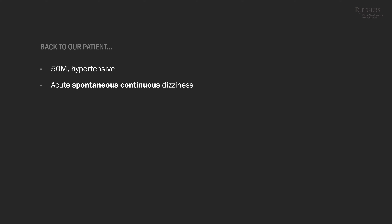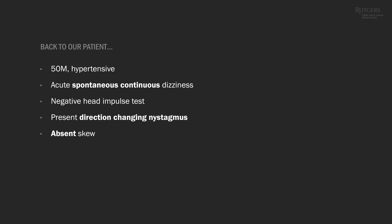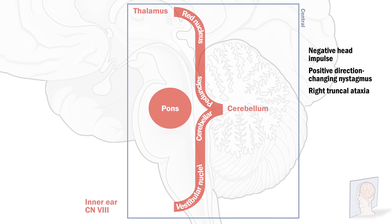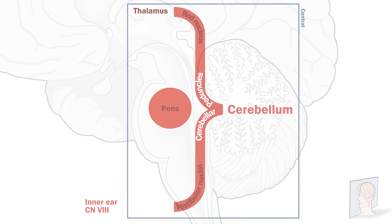Back to our patient: a 50-year-old hypertensive man with acute spontaneous continuous dizziness. On examination: negative head impulse test, present direction-changing nystagmus, absent skew, no focal neurological findings or limb ataxia, but the patient veered to the right when walking. Negative head impulse, positive direction-changing nystagmus, and right truncal ataxia are highly suggestive of a central lesion — even though the test of skew was normal. The lack of obvious focal neurological deficits makes medullary, pontine, midbrain, and thalamic lesions much less likely. We are left with the cerebellum and possibly the cerebellar peduncles.